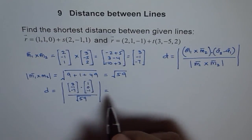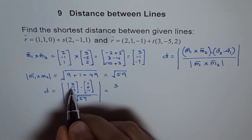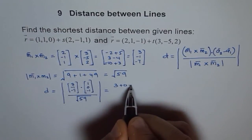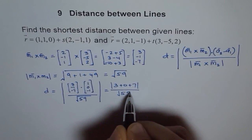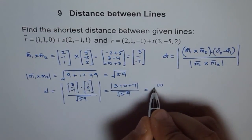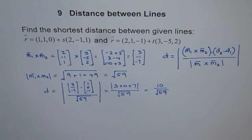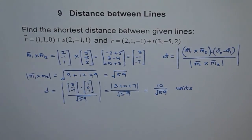So 3 times 1 is 3, minus 1 times 0 is 0, and 7 plus 7 gives us the absolute value divided by the square root of 59, which equals 10 over the square root of 59. So that is the shortest distance. If no units are given, we can write just 'units'. This is the shortest distance between the two lines.